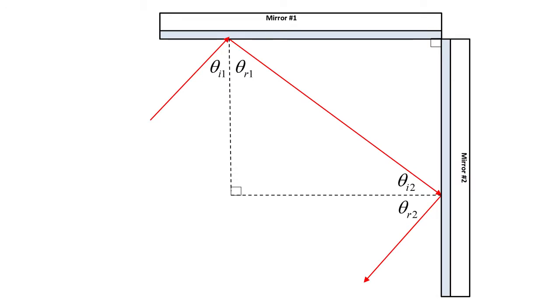When you have two perpendicular mirrors, note that the law of reflection acts for both mirrors, but what is parallel and what is perpendicular switches for the two mirrors. As light reflects off of the first mirror, the vertical component of light is flipped, and as it reflects off of the second mirror, the horizontal component of light is flipped.